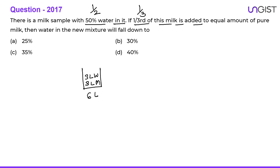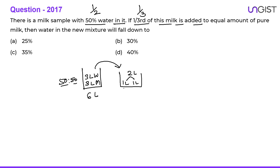One third of this milk is added to an equal amount of pure milk. One third of six liters is two liters. So if we take two liters of this solution — which is 50-50 — that two liters will contain one liter of milk and one liter of water.